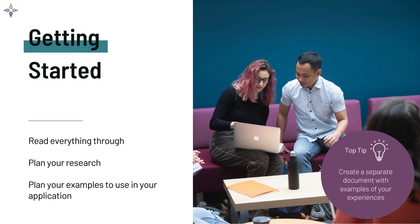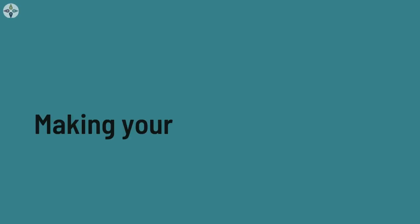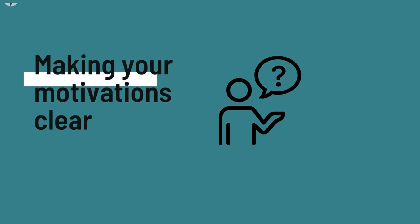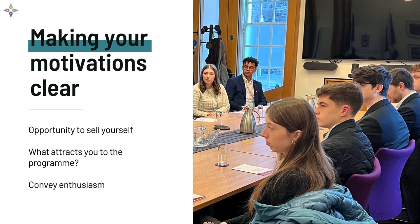Before starting your online application, read the program description and the essential and desirable criteria thoroughly to make sure you understand the content. Before you start filling in anything, read the full online application form and familiarize yourself with the questions. This will help you to plan out what research you need to do around the program and what examples you're going to take from your own experience to evidence in your application form. Plan which examples you're going to use for each of the relevant sections.